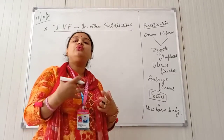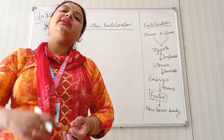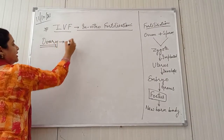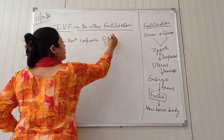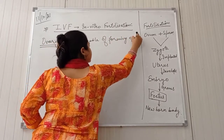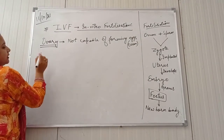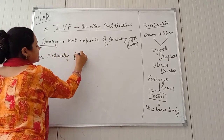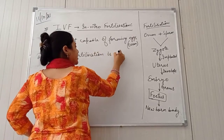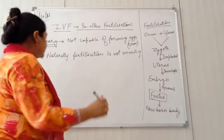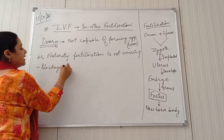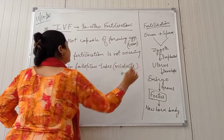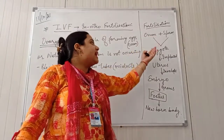But in some males and females, due to certain issues with their hormonal cycles or with their reproductive organs — especially in females when the ovary, which is the main reproductive organ, is not capable of forming eggs (also known as ovum) — or natural fertilization is not taking place, or sometimes there is blockage in the fallopian tubes, also known as oviducts. Due to these reasons, the ovum is not getting fertilized and zygote formation is not taking place.